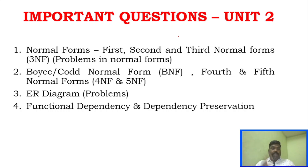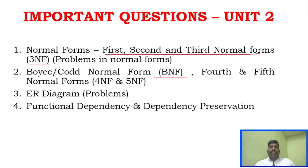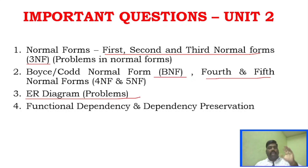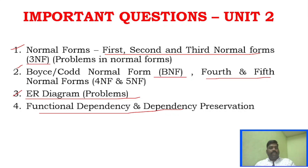For Unit 2, normalization is the core topic. The first, second, and third normal forms are grouped into one question. BCNF problems are also important. ER diagram problems are sure-shot questions. Functional dependency carries around 6 marks and dependency preservation carries 3 to 5 marks. In the third question, 90% of the time functional dependency and dependency preservation appear.